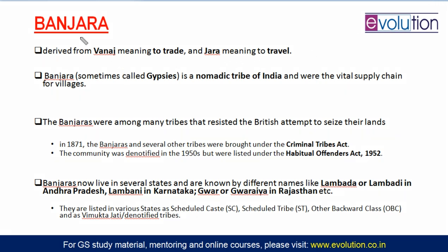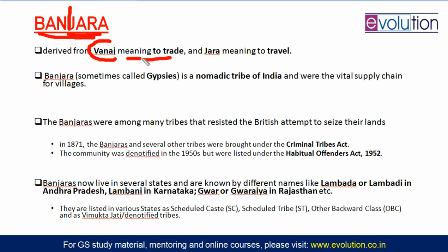The word Banjara is derived from 'Vanai' meaning to trade — Vanai, Banya, these words are related to trade. In medieval times, the Banjara community used to trade like nomads, moving from village to village, porting objects from place to place. 'Jara' means to travel, because they used to travel and trade. That is why they are called the Banjara community, and can sometimes be called gypsies.